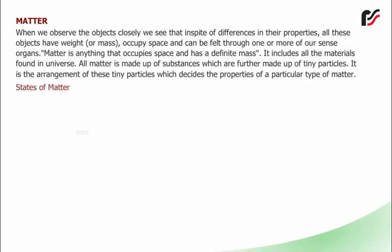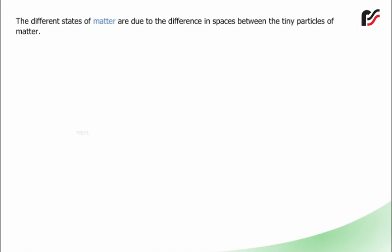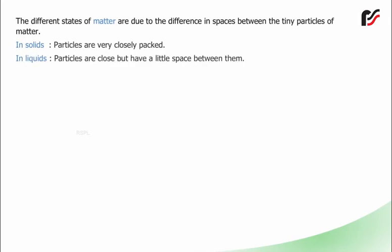Matter can exist in three states: solid state, liquid state, and gaseous state. For example, water can exist as ice (solid state), water (liquid state), and steam (gaseous state). The different states of matter are due to the difference in spaces between the tiny particles of matter. In solids, particles are very closely packed. In liquids, particles are close but have a little space between them. In gases, particles are far from each other, having large spaces between them.